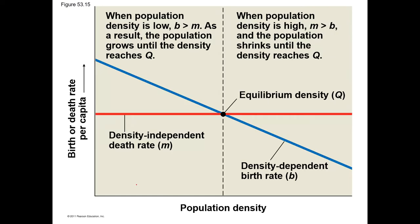Here we have a graph of population density compared to birth or death rate per capita — per capita means per individual. At very low population density, we have a certain birth and death rate, and at a very high population density we have exactly the same birth and death rate. This would be density independent: it doesn't matter if you have very few organisms or a very high population density, you get that exact same birth and death rate.